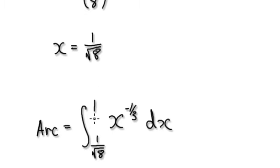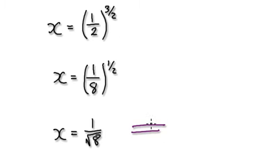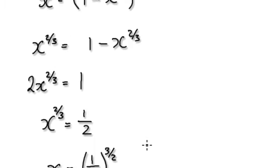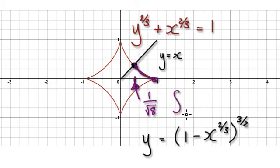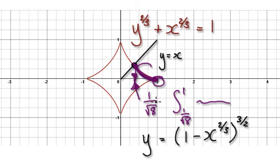Remember, we are currently here. Going back to the diagram, what this means is that the x value here is 1 over root 8. So now to find this arc length, we will need to integrate from 1 over root 8 to 1. So the x value right here is given by 1 over root 8.